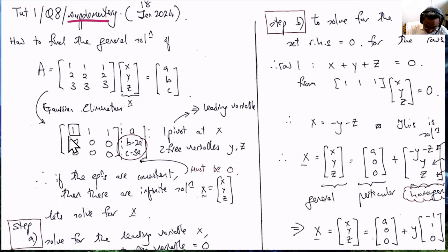Remember that if there is only one pivot, then there is only one dependent variable and two free variables.